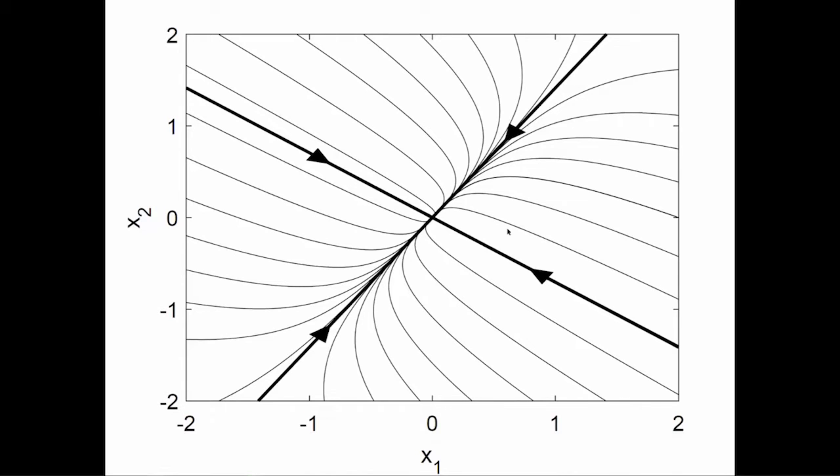As you can see, I drew the lines corresponding to the eigenvectors. And you can see that the solution along the first eigenvector, this line here, is proceeding much faster than the solution along the second eigenvector.